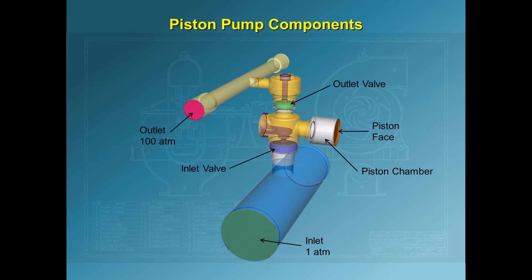These are the various components of the system. Fluid comes in at 1 atmosphere and is pumped out at 100 atmospheres. The pump is driven by an engine and the spring-loaded valves control the direction of the flow.